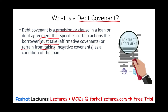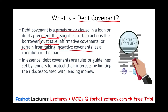When they must take action, it's called an affirmative or positive covenant. When they should refrain from taking action, it's a negative covenant. In essence, all it is, is rules and guidelines set by the lenders to protect their interests by limiting the risk in lending them money.